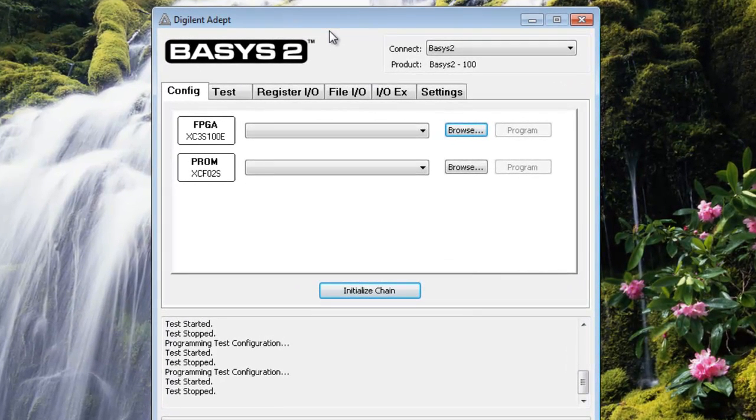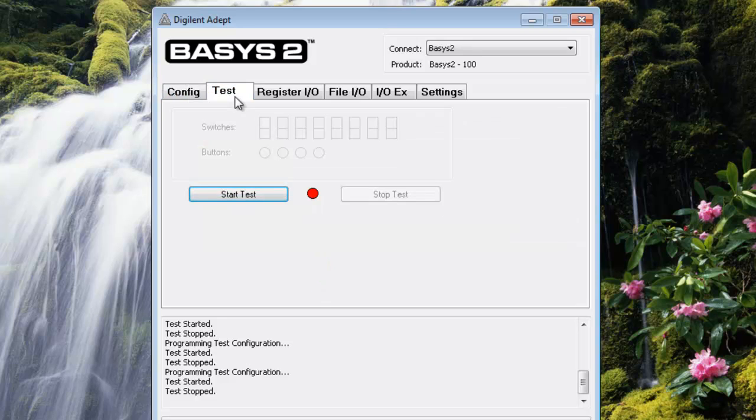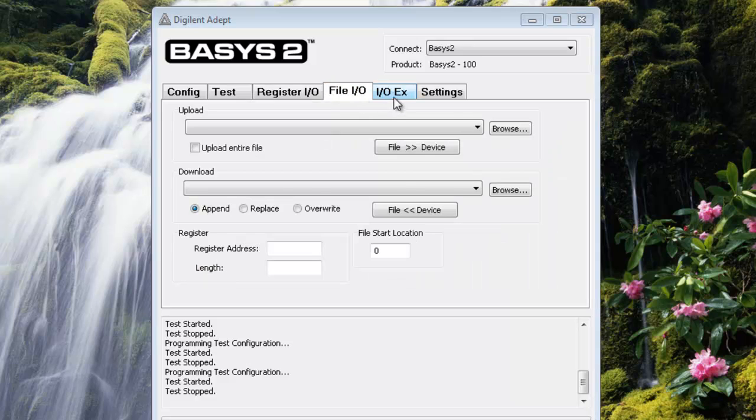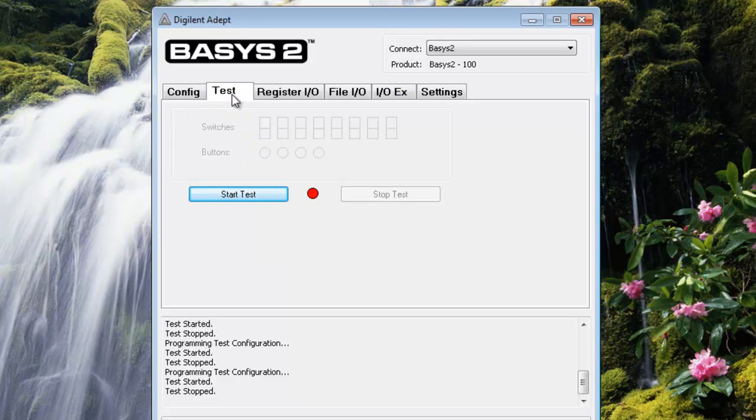the software provided for this Basys2 development board. You can see the first tab is Configuration where you can program your code into the FPGA. The second tab is Test where you can start a pre-written program and test the board registers, IOs, file IOs, IOX, and settings. For example, I'll show you the test program. If I change the switches,